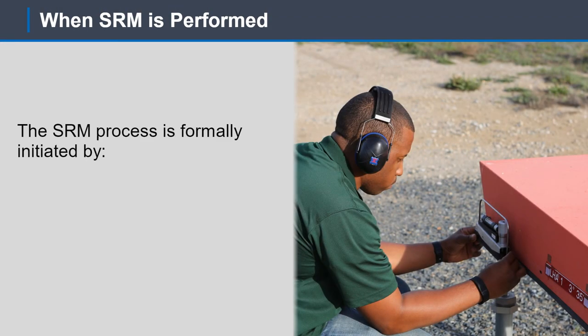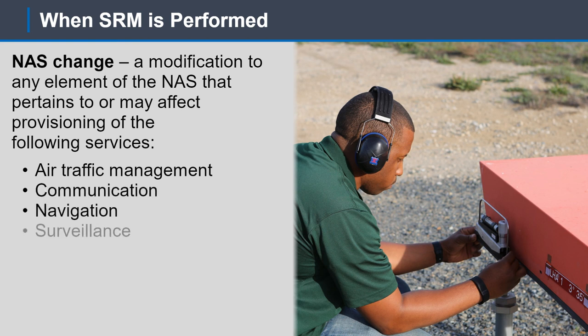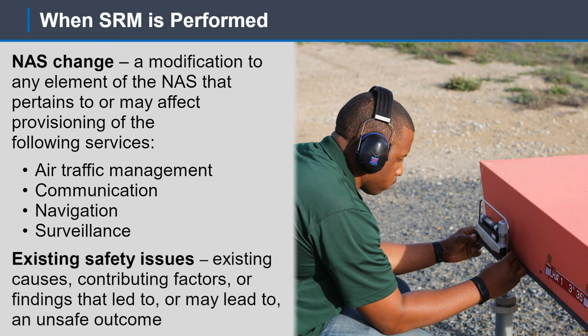The SRM process is formally initiated by NAS changes and existing safety issues. A NAS change is a modification to any elements of the NAS that pertains to or may affect provisioning of air traffic management, communication, navigation, and surveillance. Existing safety issues are existing causes, contributing factors, or findings that led to or may lead to an unsafe outcome. It is important to note that the SRM process does not approve a NAS change; rather, it serves to inform decision-makers about the potential hazards, risks, and means to reduce the associated risk.